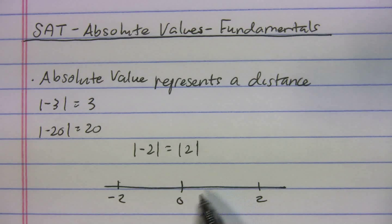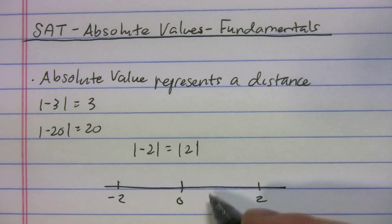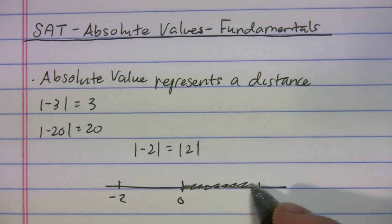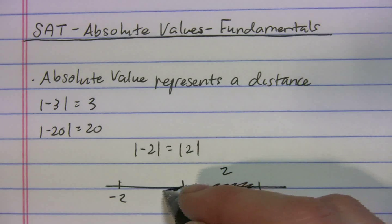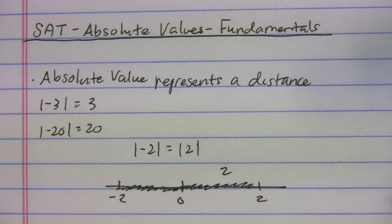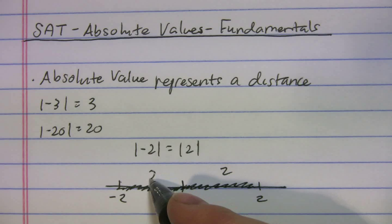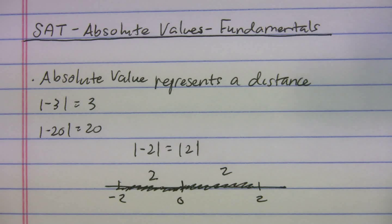If you look at a number line, if I go from 0 to 2, how far did I go? I went a distance of 2, right? If I go from 0 to -2, how far did I go? Well, even though you went to -2, you still went a distance of 2. So that's all absolute value is doing. You're just measuring a distance.